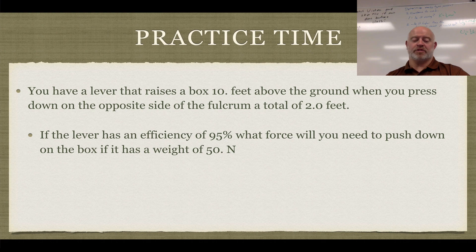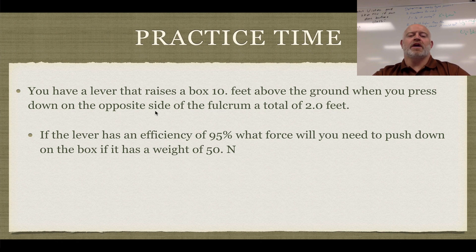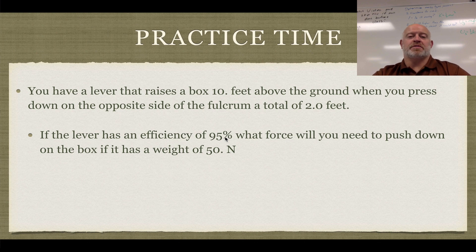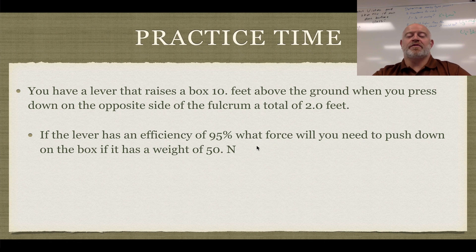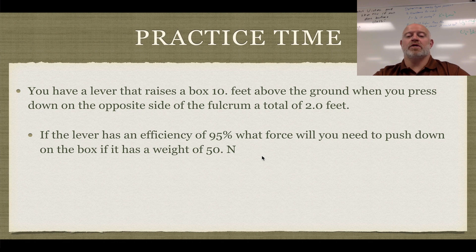Now, let's go back to our actual problem that we're dealing with here. And let's say our machine is not 100% efficient. So we still have the lever raising the box 10 feet and the opposite side of the fulcrum, it's 2 feet. And our lever now has the efficiency of 95%, which is pretty good for a simple machine like this. 95% efficient would be pretty quality there. We calculated before that we needed 250 newtons of force for that weight of 50 newtons. But if we're only 95% efficient, what is our real force that we need?